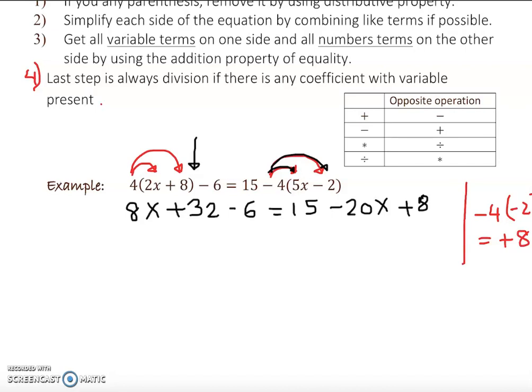All right, next thing we do, we're going to combine like terms. And we know by now actually we can combine only one side of the equal sign. So these two are similar and also these two are similar. So we're going to have 8x plus 32 take away 6 is 26, equal to 15 plus 8 is 23 minus 20x.